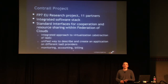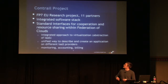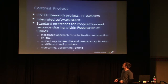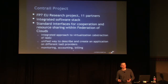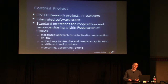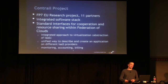The Contrail project is a European Seventh Framework Programme EU project, started in 2010, with a consortium of 11 partners. The idea is to create an integration software stack with standard interfaces for cooperation and resource sharing within the federation of clouds. We are building an abstraction of IaaS which will give a unified way to describe and create an application, and also provide supporting services such as aggregation of monitoring metrics on the federation level, aggregating monitoring data to the accounting service and also supporting billing services.